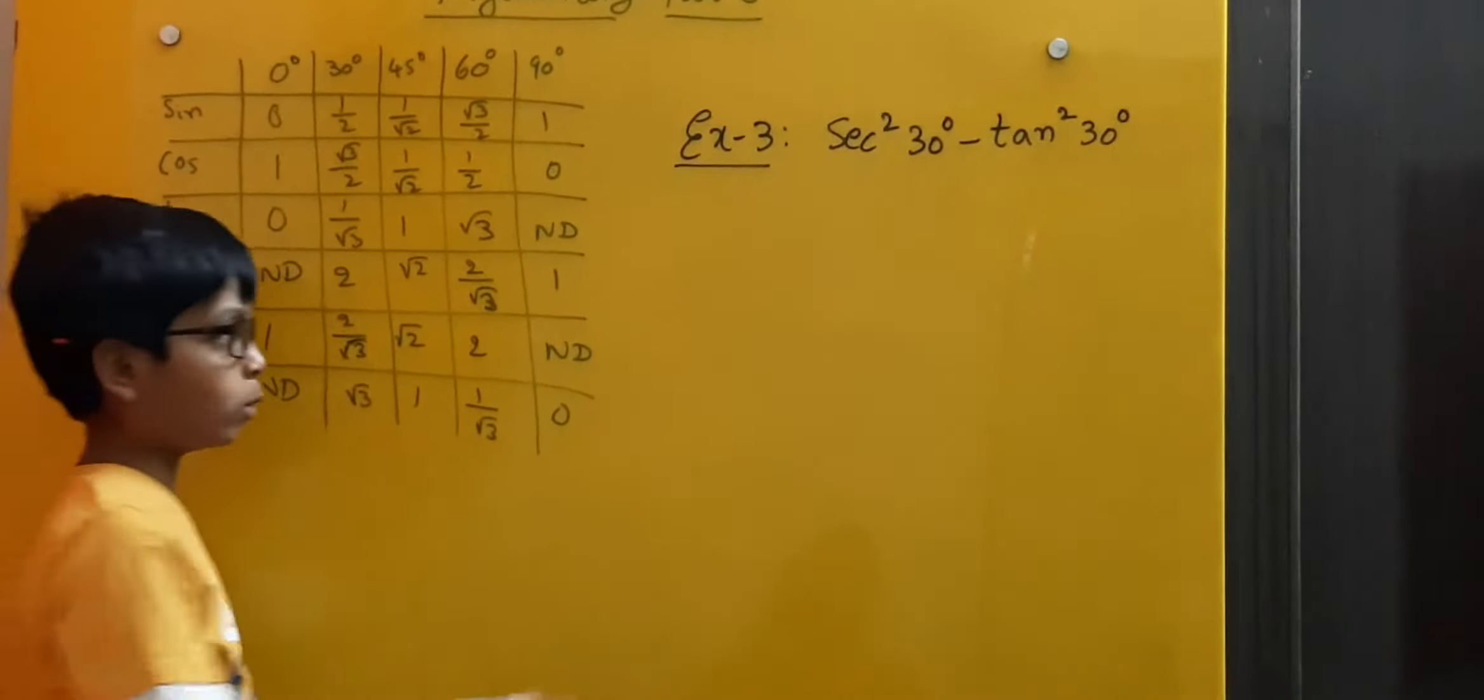Since here square is there, so we write whole square. Minus, we know that tan 30 is equal to 1 by root 3. Since square is there, we write whole square.